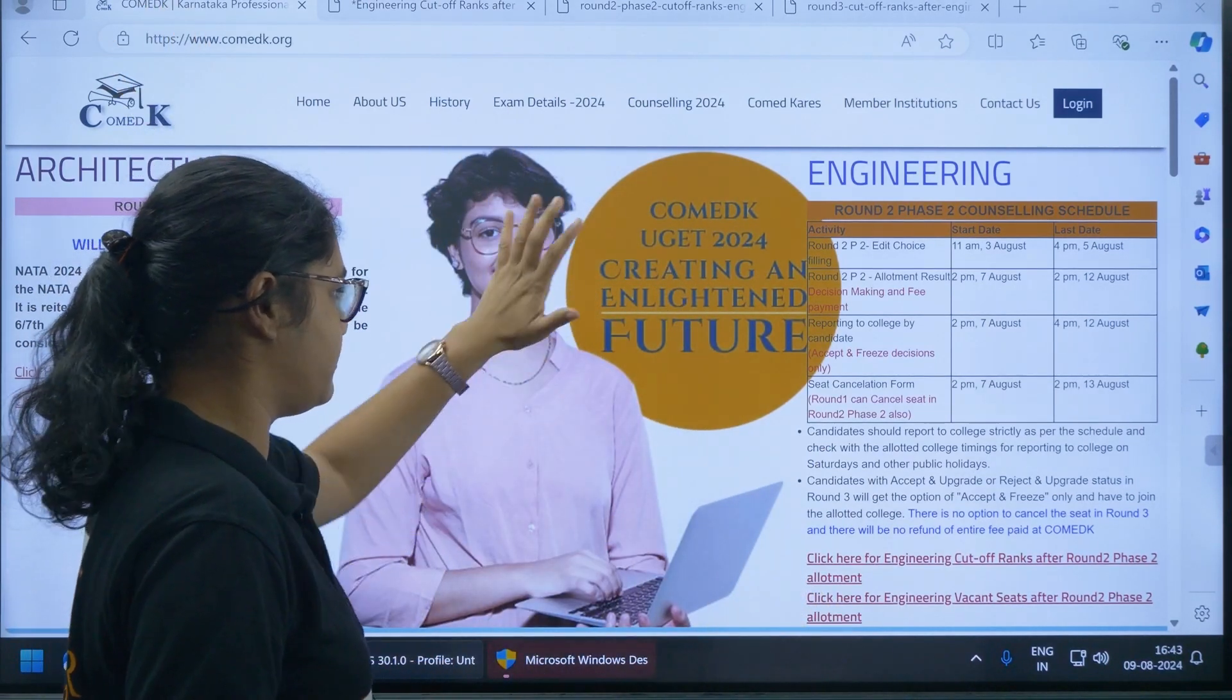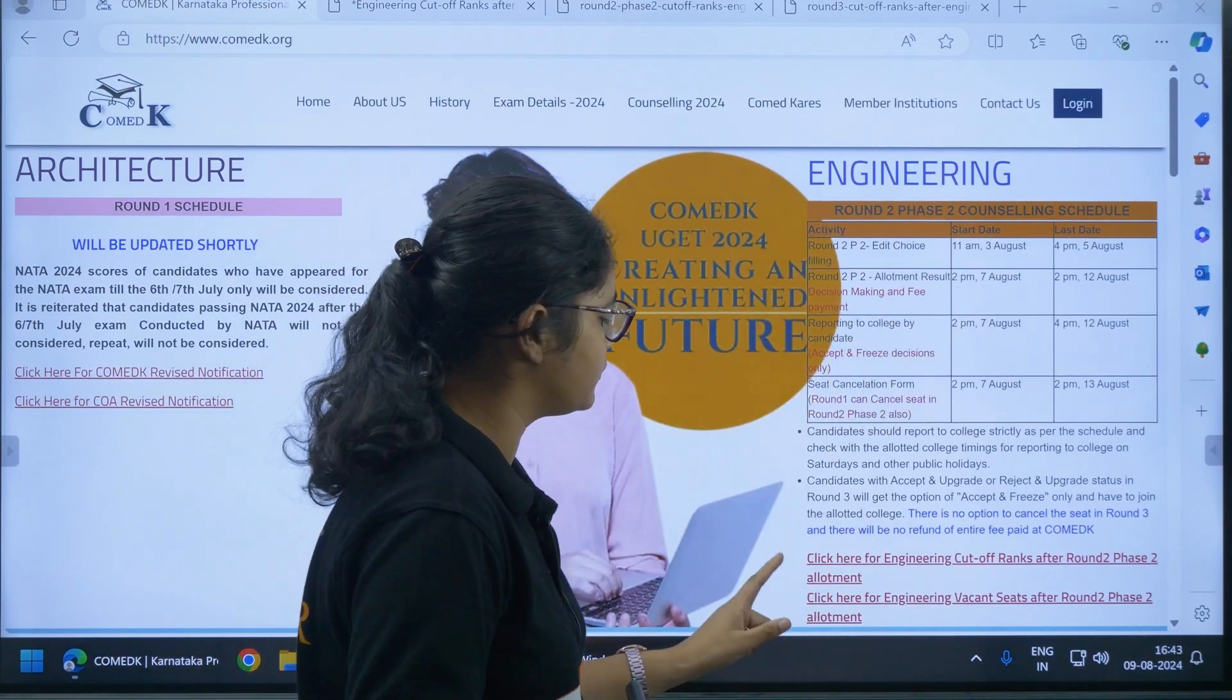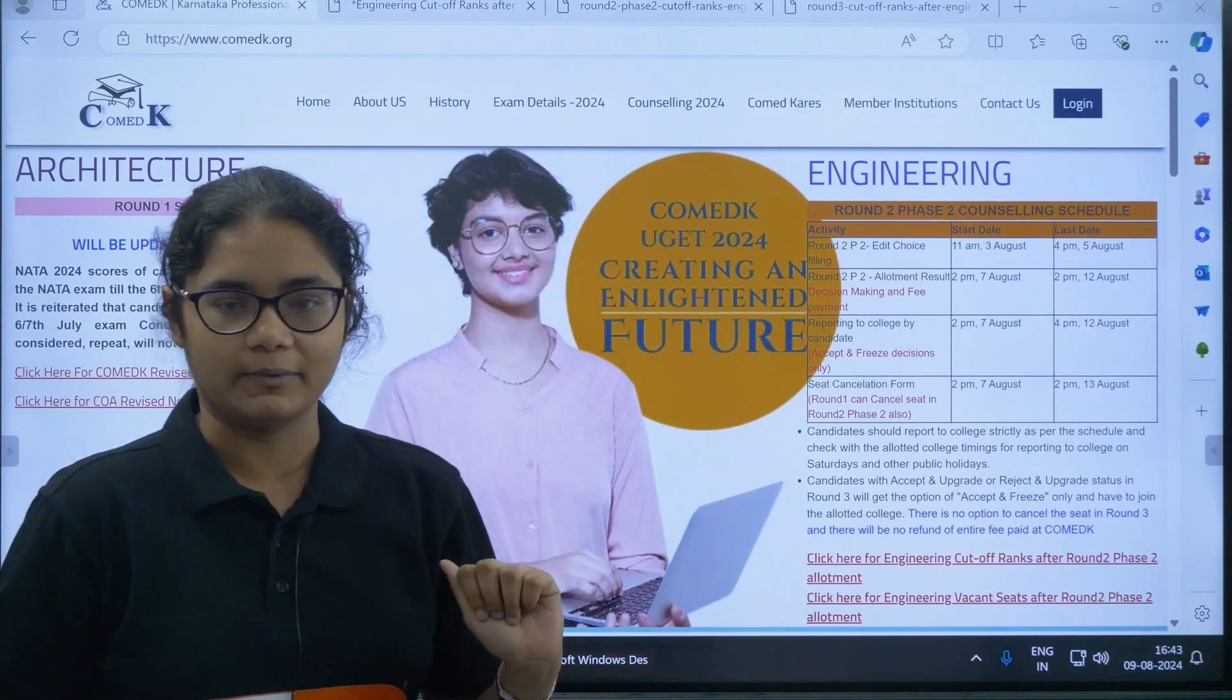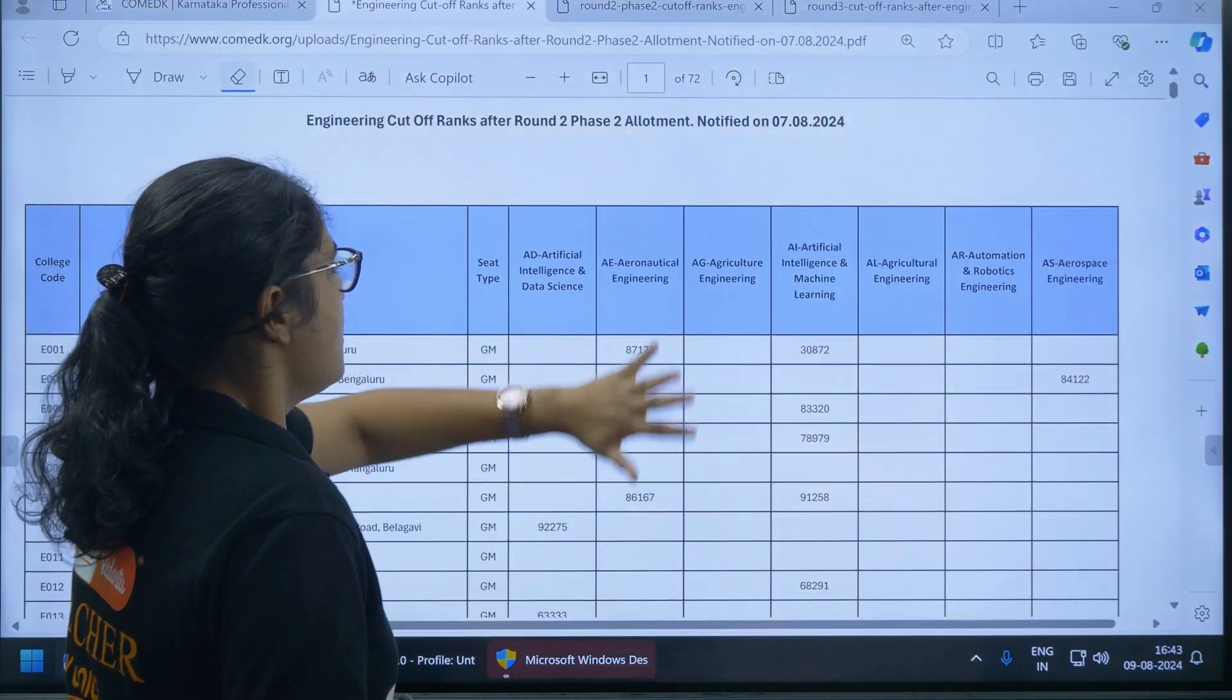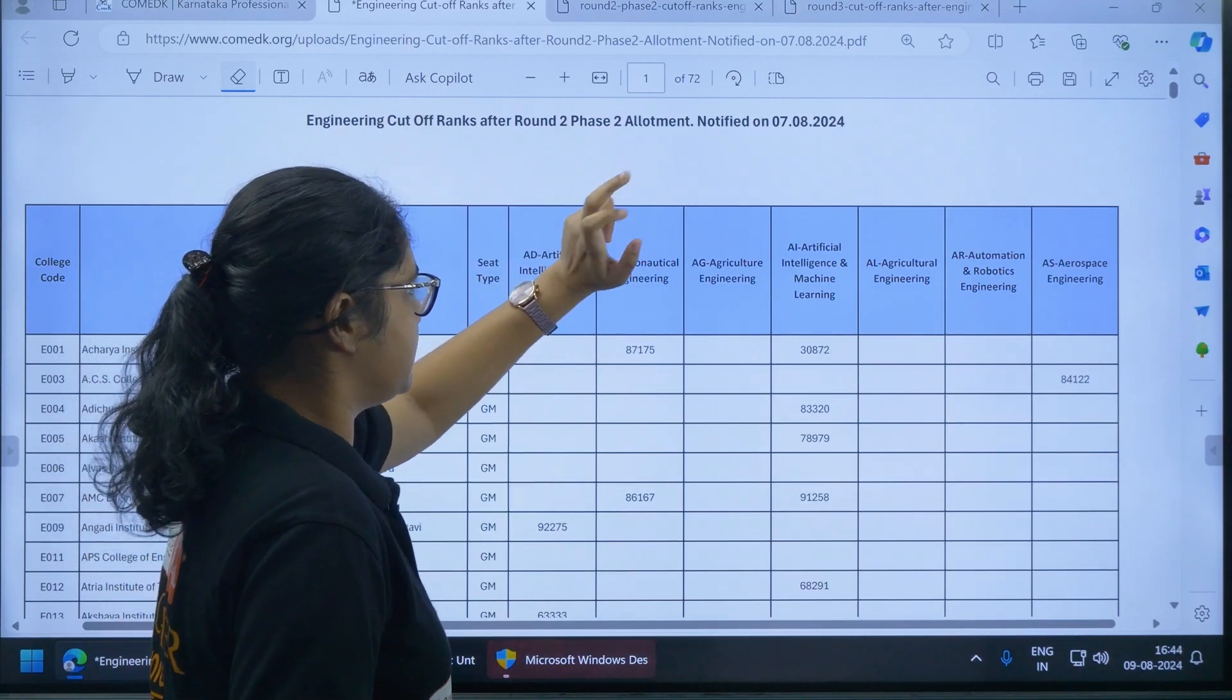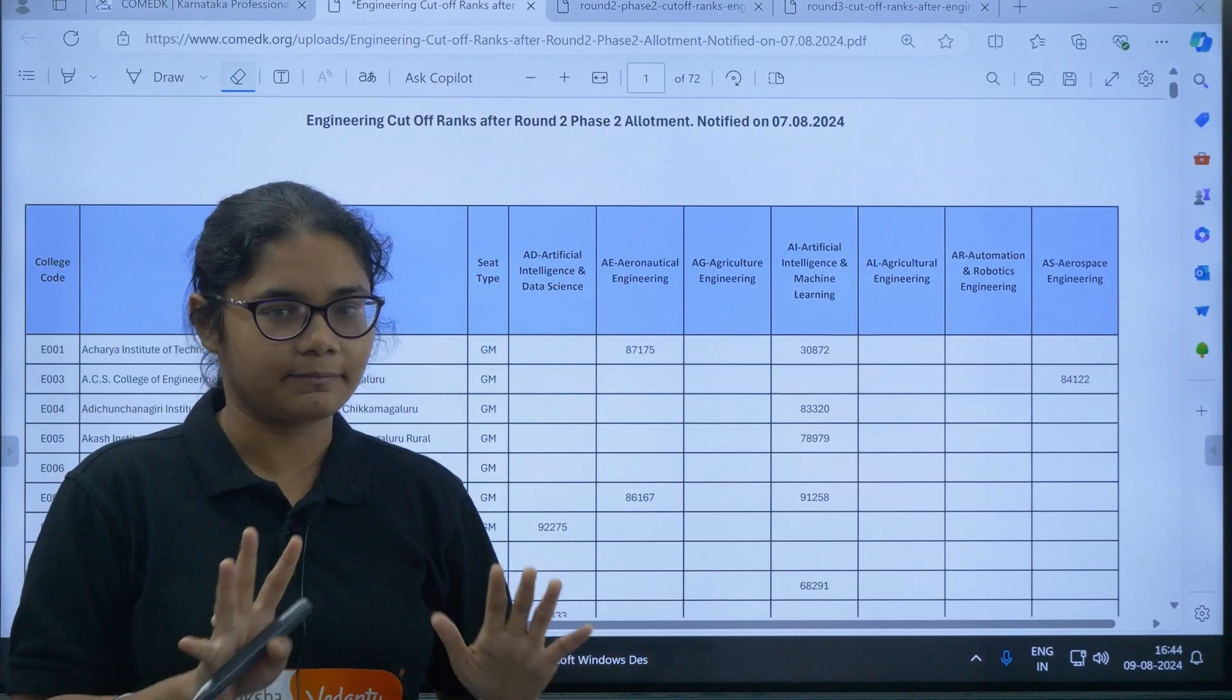On their official home page, you can see below this table where the schedule is there. Below that you can see 'Click here for engineering cutoff ranks after Round 2 Phase 2 allotment.' Just click on this link and you will be directed to this page where you can see the engineering cutoff ranks after Round 2 Phase 2 allotment for 2024. Now this is very simple, part 1 is done.